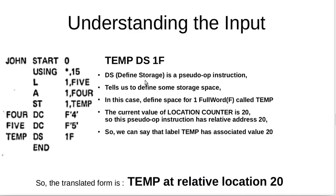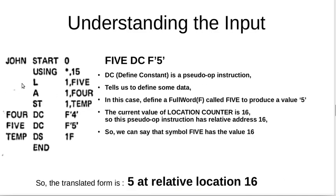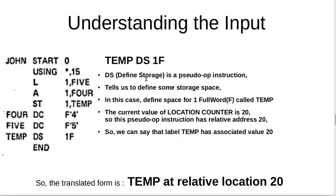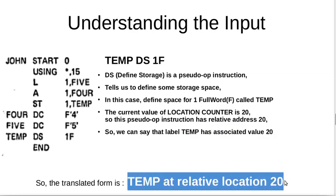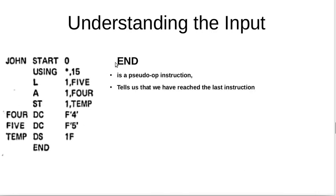Moving on, we have 'TEMP DS 1F'. DS stands for define storage — it is another pseudo-op instruction that tells us to define some storage space. In this case we need to define space for one full word (1F), and that storage space will be known as TEMP. The current value of the location counter is 20 — because the previous instruction had 16 plus 4 equals 20. So this pseudo-op instruction has relative address 20, meaning label TEMP has an associated value of 20: TEMP is at relative location 20. The next and last instruction is END — another pseudo-op that tells us we have reached the last instruction.